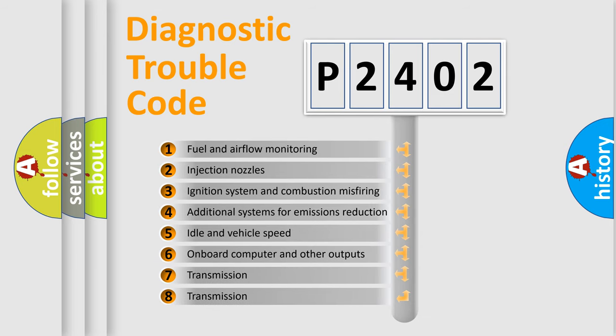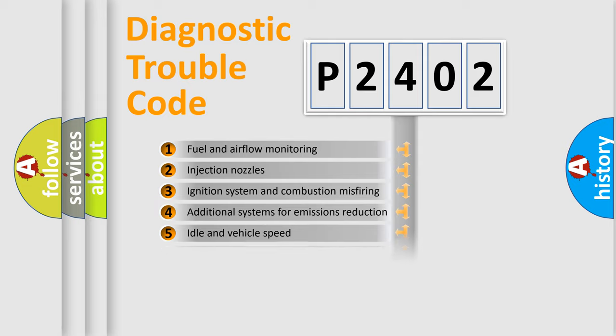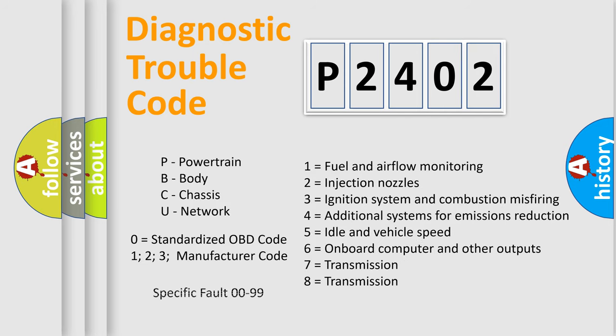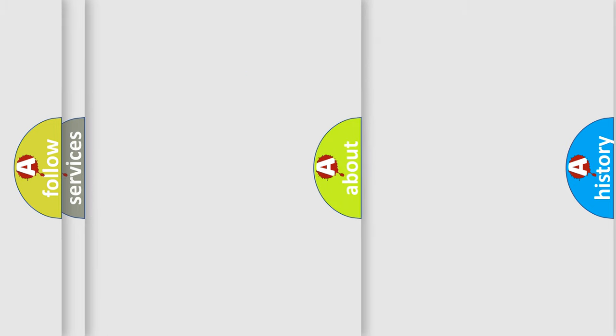The third character specifies a subset of errors. The distribution shown is valid only for the standardized DTC code. Only the last two characters define the specific fault of the group. Let's not forget that such a division is valid only if the second character code is expressed by the number zero.